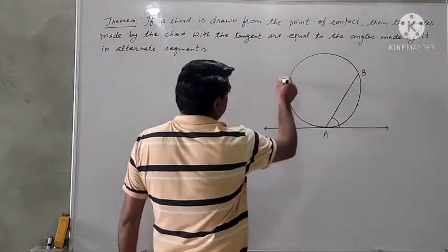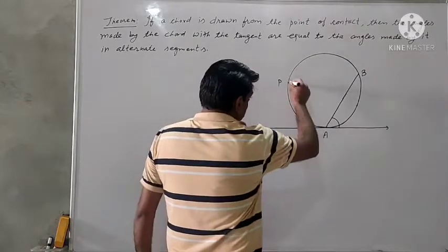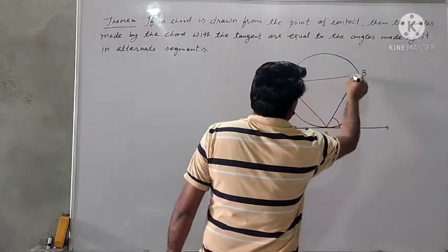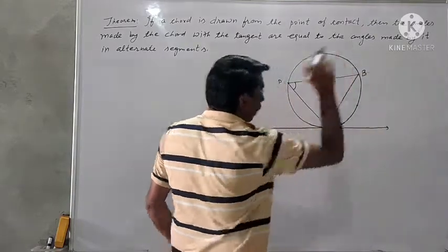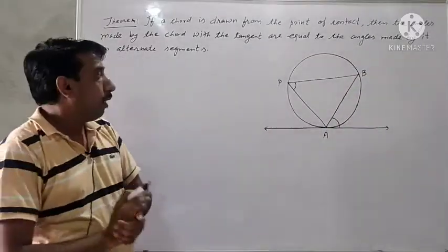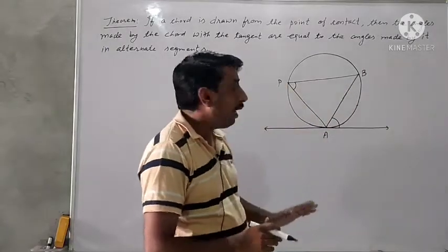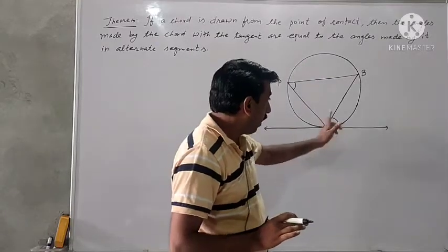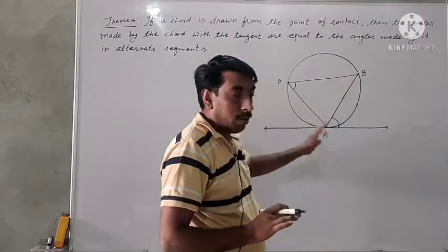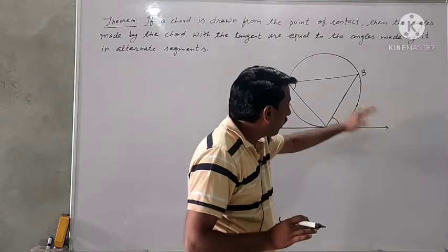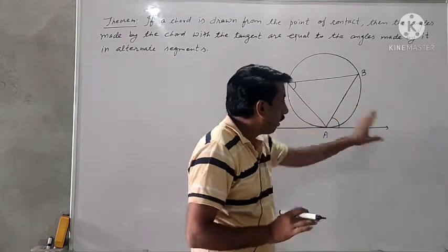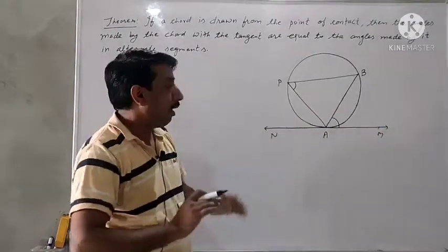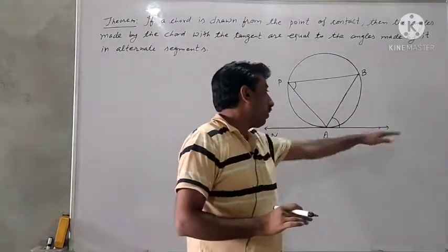Let this point be P. If we join AB and BP, we get angle APB. This angle APB is made by this chord in the major segment. And the angle made by this chord with this tangent in this direction is BAM. I have put the name of this tangent as N, A, M. The point of contact is A.